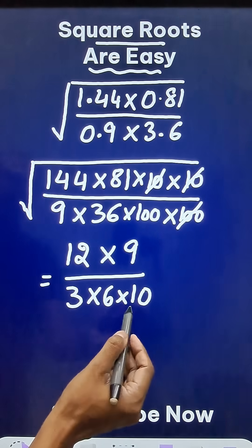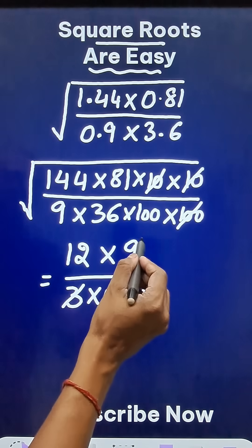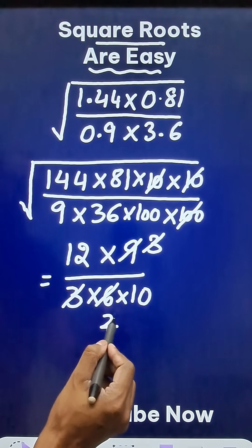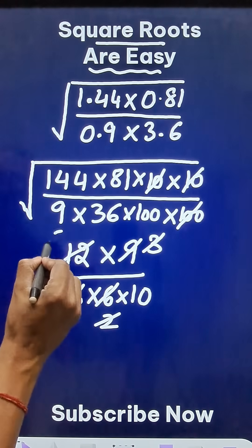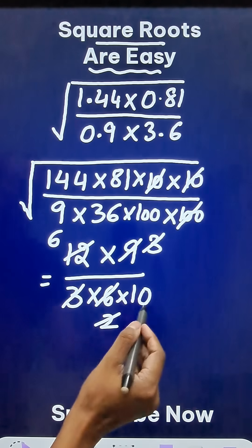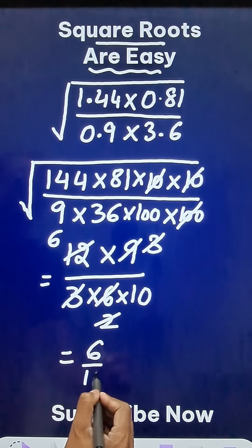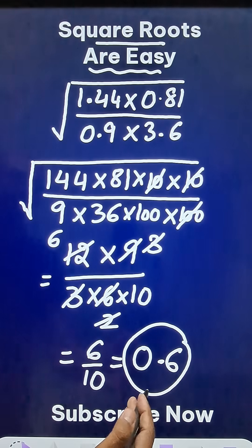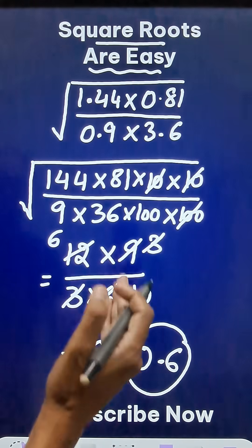Now, can you cancel some more common factors here? Obviously, yes. 3 cancels 9 three times, 3 cancels 6 two times, and 2 cancels 12 six times. Still, 6 upon 10 is remaining. And that is so simple. 0.6 happens to be your final answer. Most of the students can do this orally.